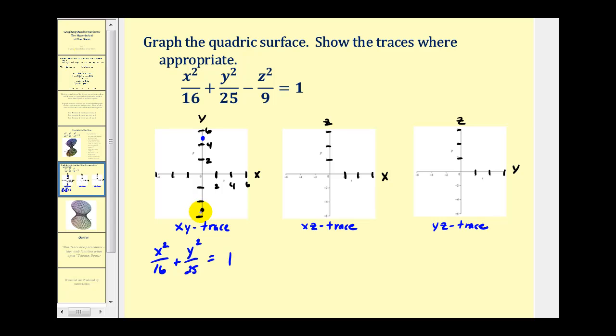These will be the endpoints of the major axis. A squared is equal to sixteen, so a is equal to four. We'll go four units to the right and four units to the left. The ellipse passes through these four points. So it looks something like this. This would be the xy trace.